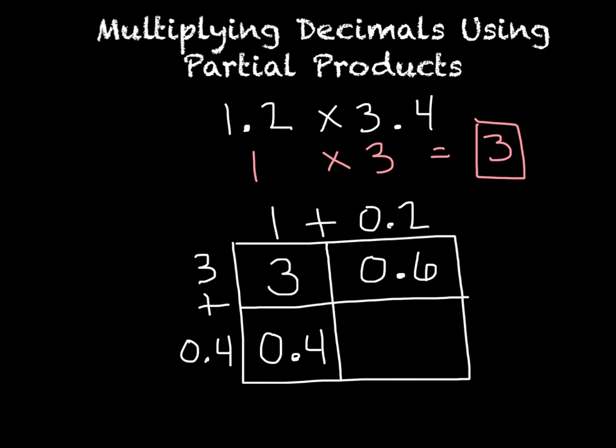And then our last box, 0.4 times 0.2. Here's the tricky part. If you think about it, a tenth of a tenth, or a tenth times a tenth, is going to be a hundredth. So that means our answer needs to be in the hundredth place. 2 times 4 is 8, but we know it's going to be 0.08. So it's real important to realize that when you're doing a tenth times a tenth, a tenth of a tenth is going to be a hundredth, which is why this is 0.08.